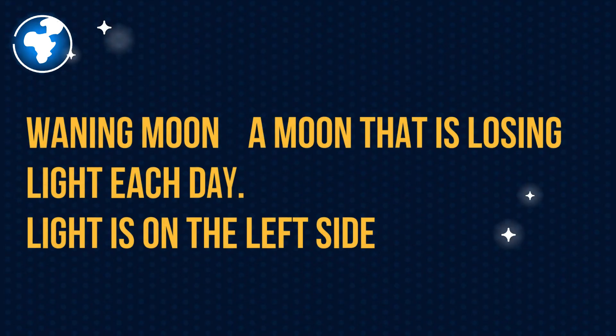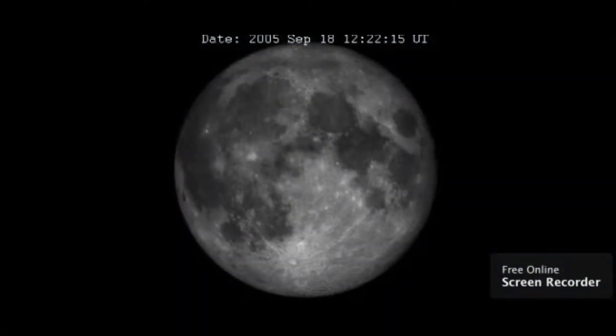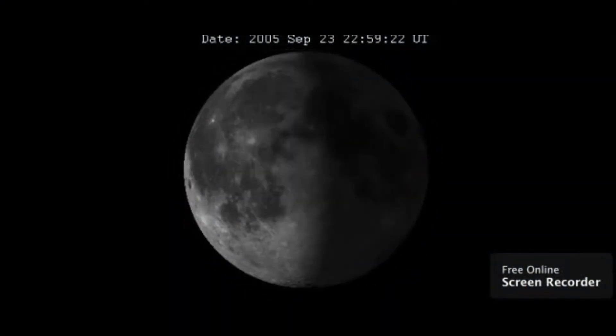Next we have waning moon, a moon that is losing light each night. The light is on the left side. And here's a waning moon.